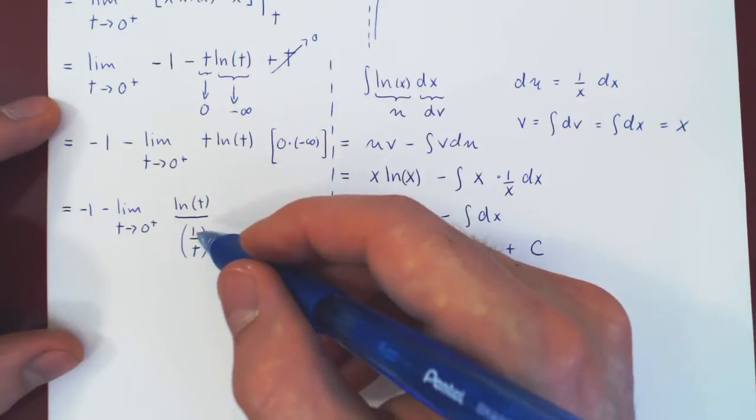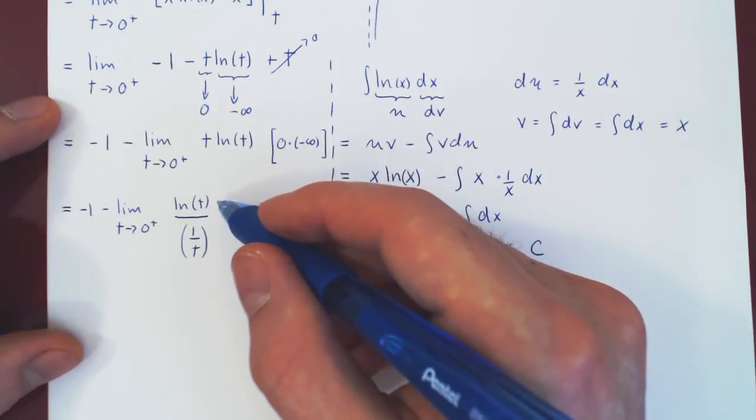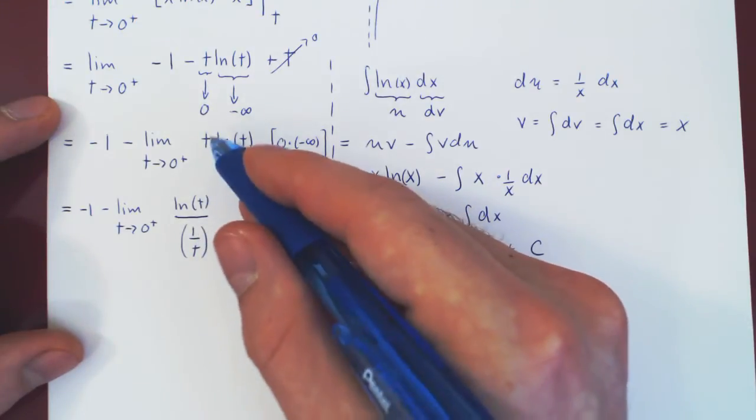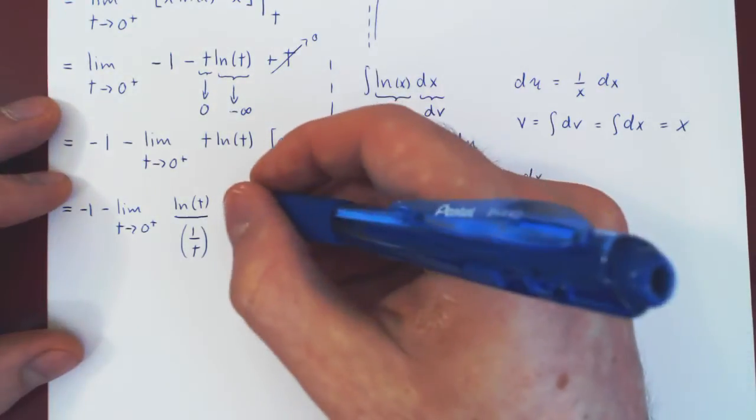If I divide by 1 over t, it's the same as multiplying by the reciprocal, which is t over 1, which is simply times t. And now the case is interesting.